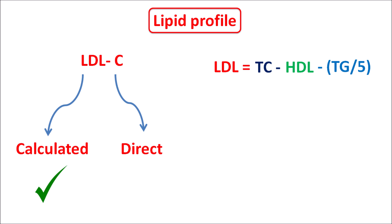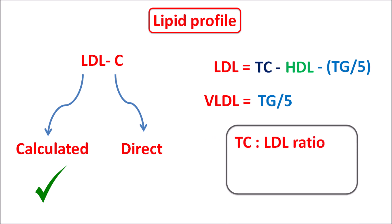In this way, LDL cholesterol can be calculated from total cholesterol, HDL, and triglyceride levels. But in patients who have a high percentage of triglycerides, this calculation is somewhat invalid. In such patients we can go for direct measurement of LDL cholesterol. The levels of VLDL can be estimated as triglycerides divided by 5. The results of the lipid panel also indicate ratios such as total cholesterol versus LDL cholesterol ratio, and similarly the ratio of LDL to HDL — all these are calculated and reported in the results of the lipid panel.